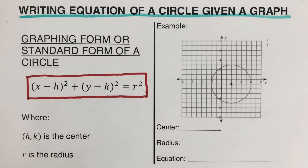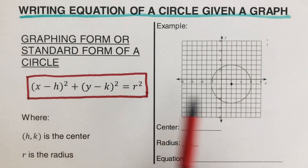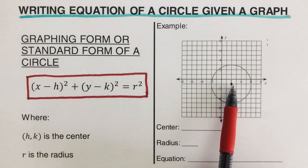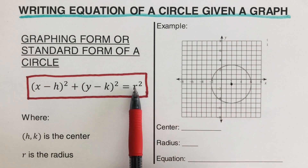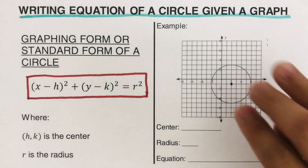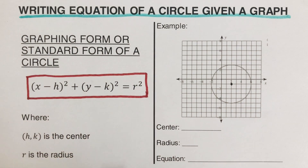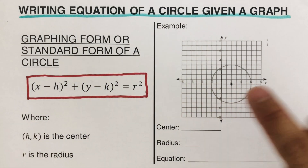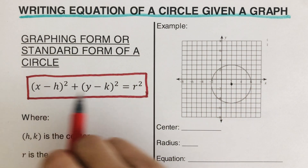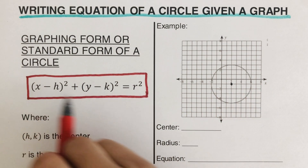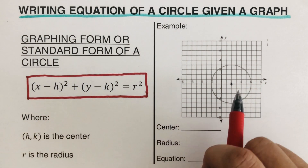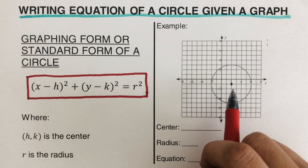Our h and k represent the center of the circle, and our r represents the radius. Let's have an example to better see how we can use this general form to come up with an equation that would work for this specific circle.